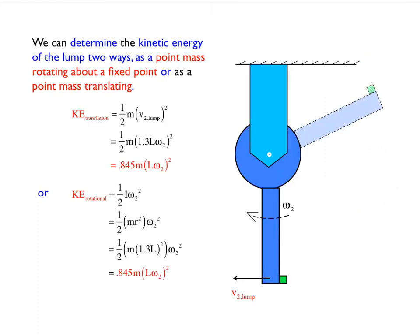Interestingly, we can figure out the kinetic energy of the little lump in one of two ways. We can either think of it as simply a point mass that's moving along with some velocity, so it would have translational kinetic energy, one half m v squared. The velocity of this point is going to end up equaling r omega, where r is equal to this distance 0.3L plus this distance L, or 1.3L times omega. If you square that and multiply by half m, it would give you the kinetic energy.